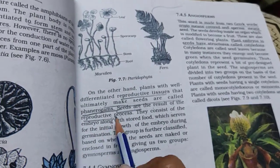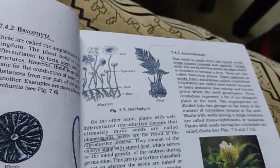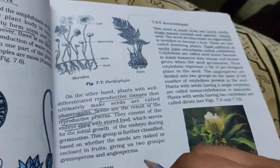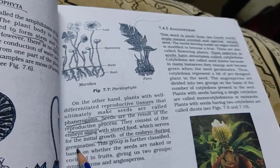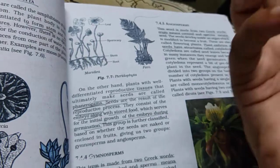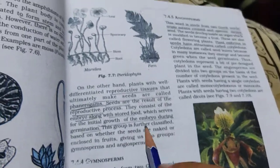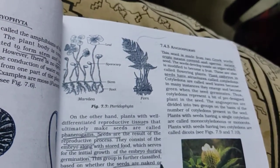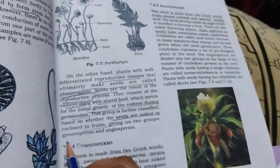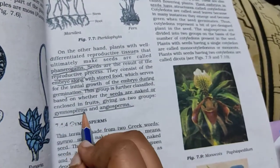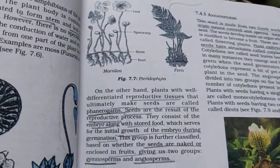Seeds consist of an embryo with stored food, which is used for the initial growth of the embryo during germination. This group is further classified based on whether the seeds are naked or enclosed - giving us Gymnosperms and Angiosperms.